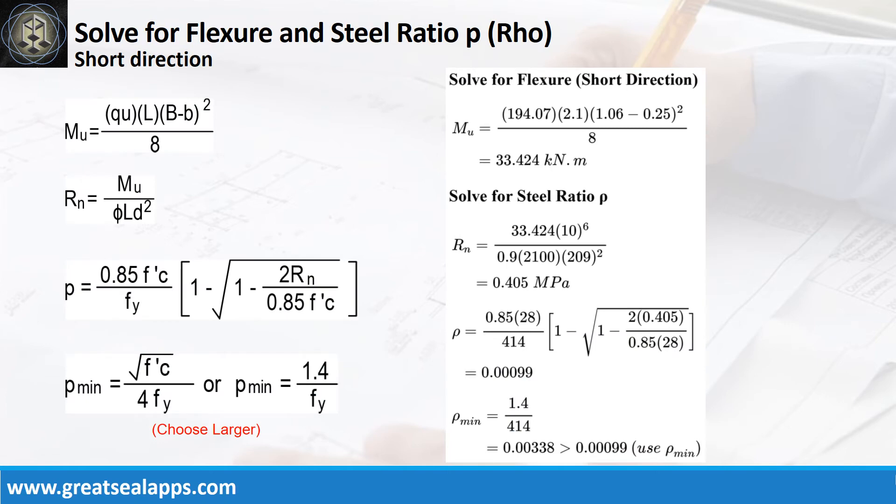At short direction, given ultimate soil pressure equals 194.07kPa, footing width equals 1.06m, footing length equals 2.1m, and column side equals 250mm, the maximum moment is 33.424kNm. Given resistance factor equals 0.9, L equals 2,100mm, and D equals 209mm, the beam design ratio RN equals 0.405MPa, and reinforcement ratio rho equals 0.00099. Use rho minimum of 0.00338.